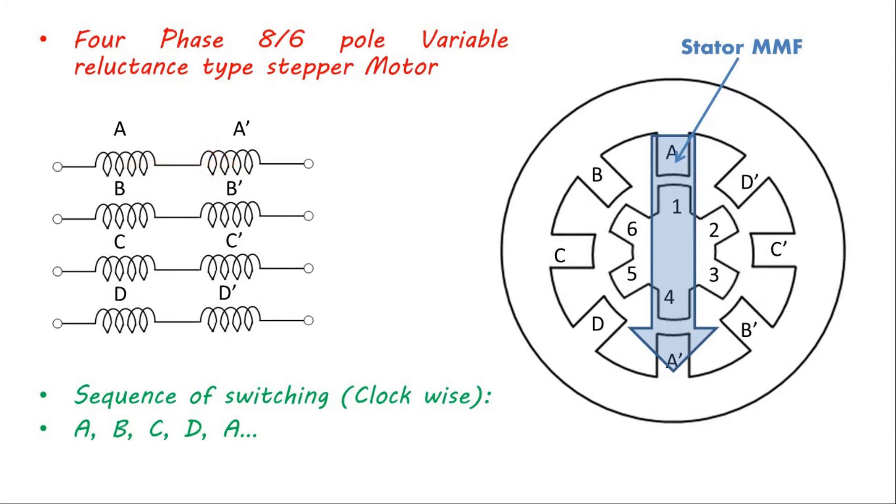Now, if we turn off phase A and simultaneously turn on phase B, then orientation of stator mmf is shifted along the B phase. Now this rotor position cannot offer the minimum reluctance path for the stator flux. So the rotor rotates in such a direction so that their poles align to stator pole.